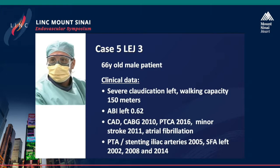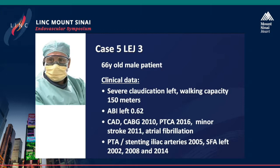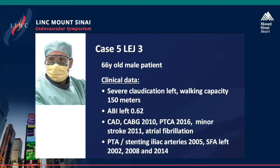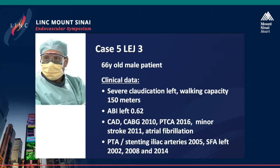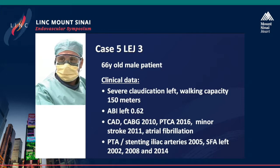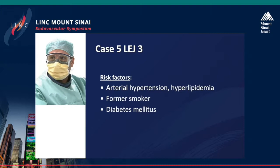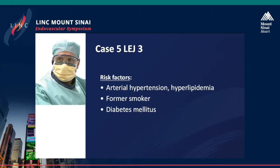He also has atrial fibrillation, and had some interventions on the lower limbs with stenting of the iliac arteries in 2005, and repeat SFA stenting on the left side in 2002, 2008, and 2014. Risk factors include hypertension, hyperlipidemia, former smoker, and relatively long-lasting diabetes mellitus.